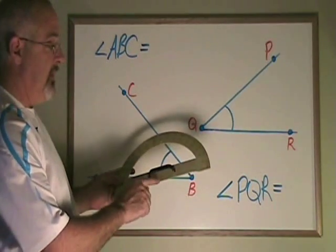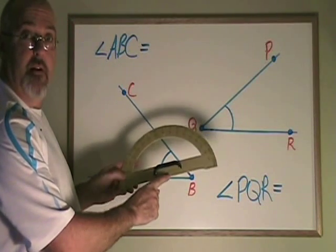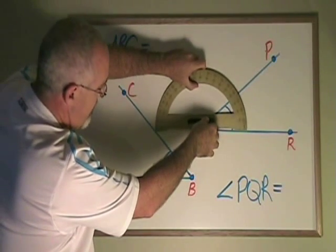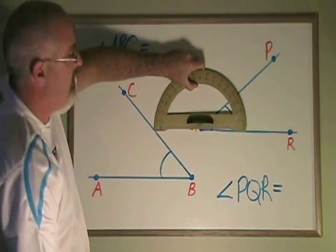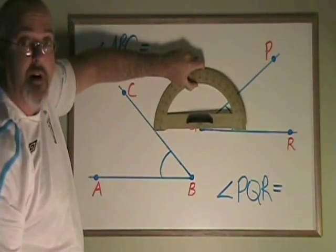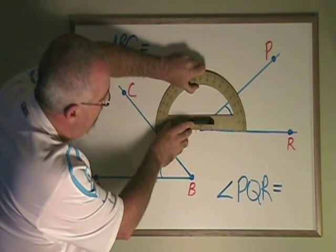The first thing we must do is take what I call the zero point of the protractor, which is right here, and place it on the vertex of the angle we are measuring. We also have to make the baseline at the bottom of the protractor go across one of the lines that makes up the angle. That's now done.